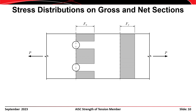As the magnitude of force P increases further, eventually the stress on the gross section will reach the yield stress Fy, or the stress on the net section will reach the tensile stress Fu. While the stress on the net section was non-uniform at lower loads, at higher loads the inherent ductility of the steel allows the stress to redistribute until it is approximately uniform, at least for well-designed connections. The strength associated with yielding on the gross section is Pn = Fy × Ag, while the strength associated with fracture on the net section is Pn = Fu × An.